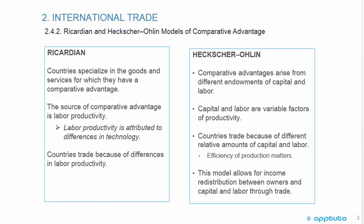Efficiency of production matters as well, and the Heckscher-Ohlin model allows for income redistribution between owners of capital and labor through trade.